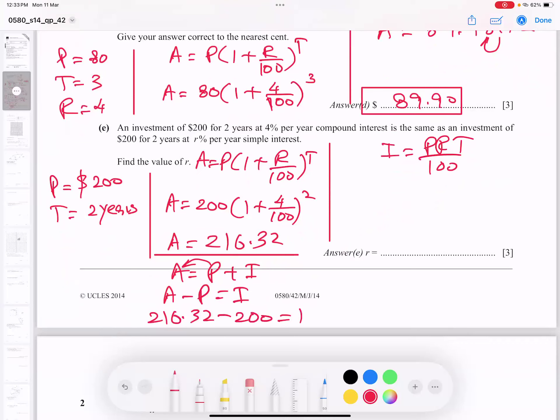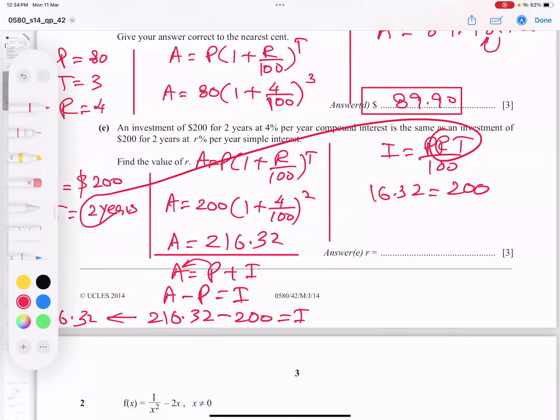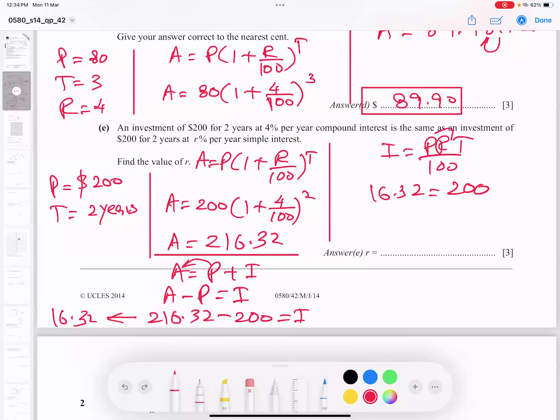P will go there. So A minus P give us I. So it is 216.32. Investment is 200. So 200 subtract. So I becomes what? This is called profit. So if I subtract 200, I get $16.32. So this profit will go there because simple interest I gives you always profit. So 16.32, I will plug in here. Many students put this value directly wrong. So P is still, again, 200. Rate of interest for simple is unknown because you said R, small R.